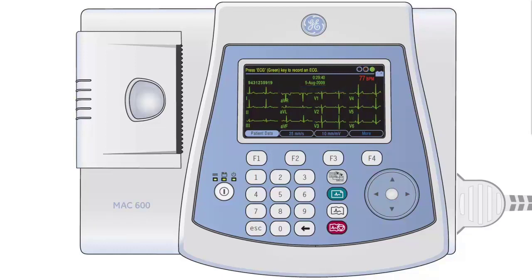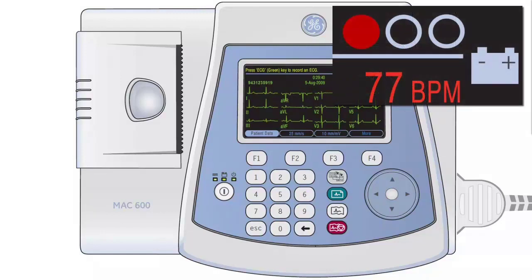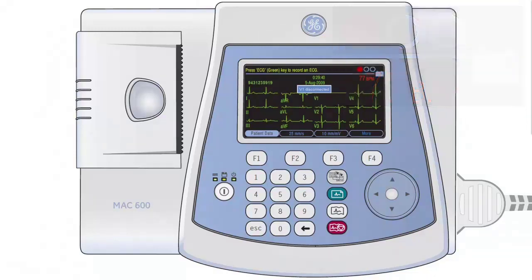A red indicator means that one or more of the leads has a very poor connection or has become completely disconnected. The machine will attempt to identify and indicate the problematic lead. If the machine does not indicate the exact lead with the problem, all leads should be checked for good, secure connection to the patient.